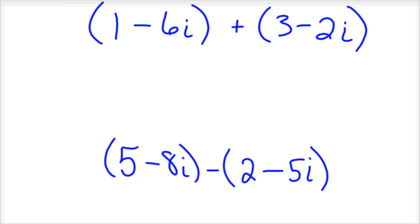So on the first one, I would add the 3 and the 1 together to give me 4, and then negative 6 minus 2 is negative 8i. And so there's your complex number if you add the first two together.